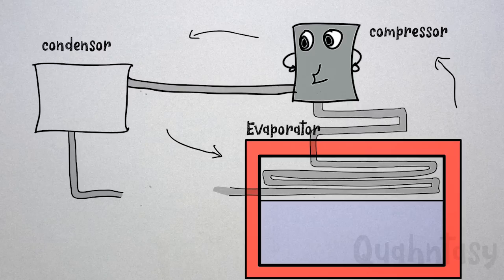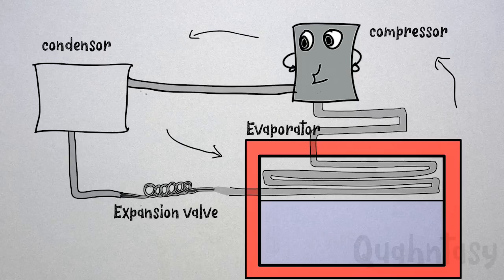So how can we use this process to cool stuff? We can place an expansion valve in between the condenser and evaporator. Now our coolant is really spread and cooled out when it reaches the evaporator. It absorbs heat there, then it goes to the compressor, then condenser where it loses heat, and the cycle repeats.